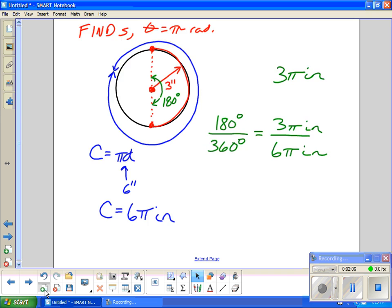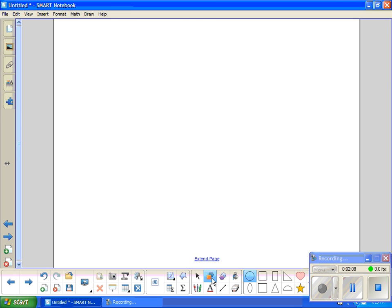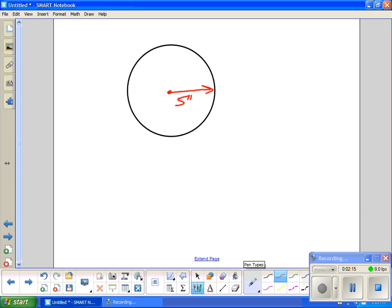For another problem, let's make the radius of this circle 5 inches and find the arc length for 210 degrees. We know it's over half the circle. We could convert this to radians, but we'll skip that.